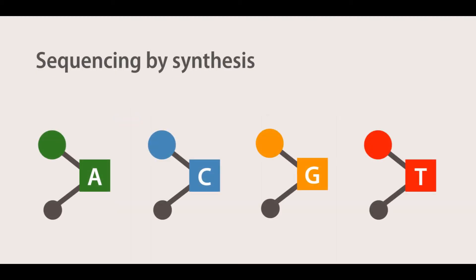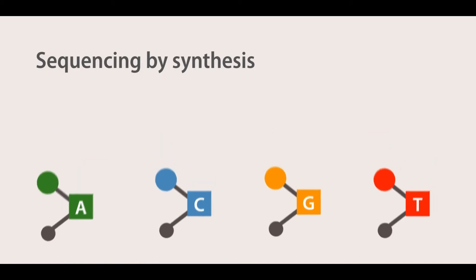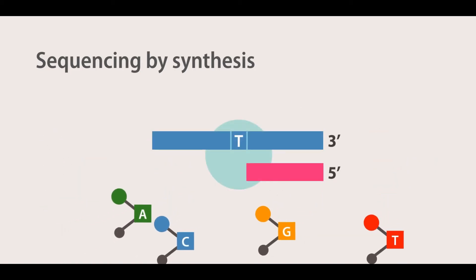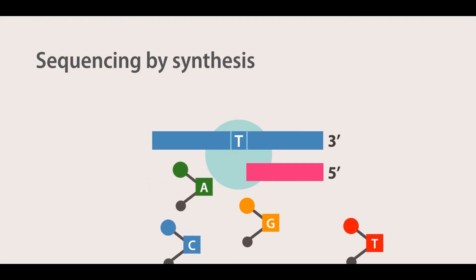Sequencing by synthesis utilizes the step-by-step incorporation of reversibly fluorescent and terminated nucleotides for DNA sequencing and is used by the Illumina NGS platforms. All four nucleotides are added to the sequencing chip at the same time. After nucleotide incorporation, the remaining DNA bases are washed away.